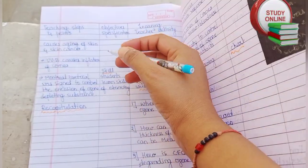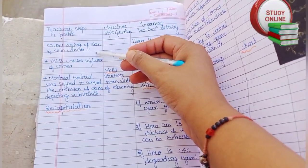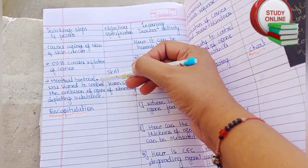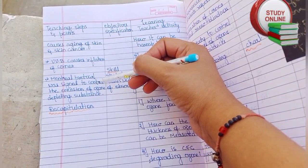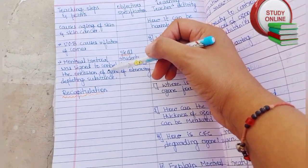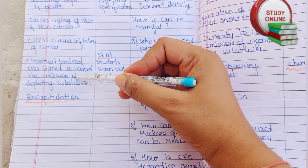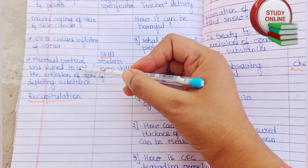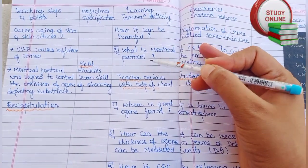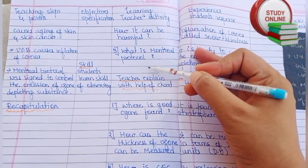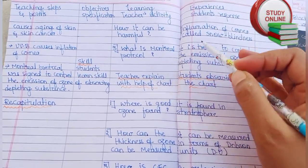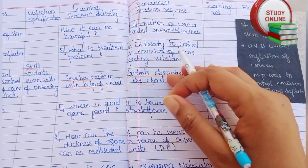The rest of Presentation 2 covers UVB causing inflammation of the cornea, and introduces the Montreal Protocol. I have written about the Montreal Protocol here. The last question for this section is: what is the Montreal Protocol? And here is the expected answer.